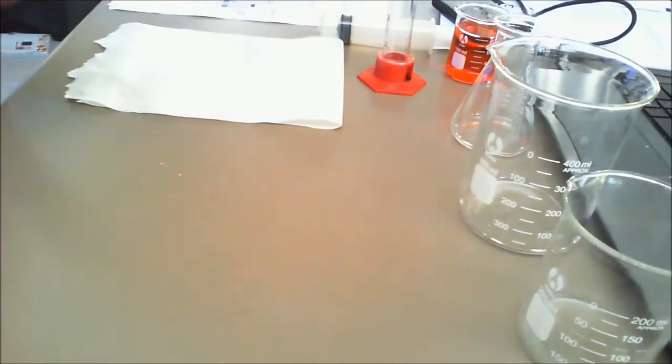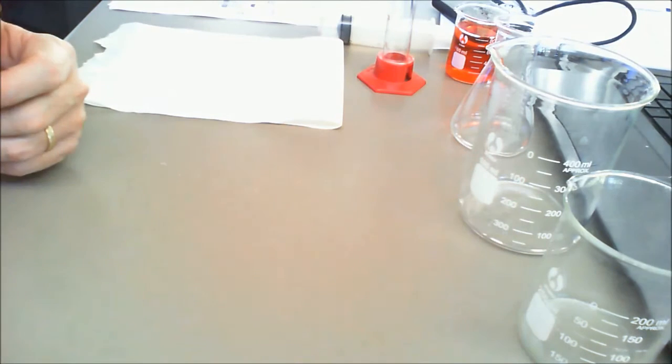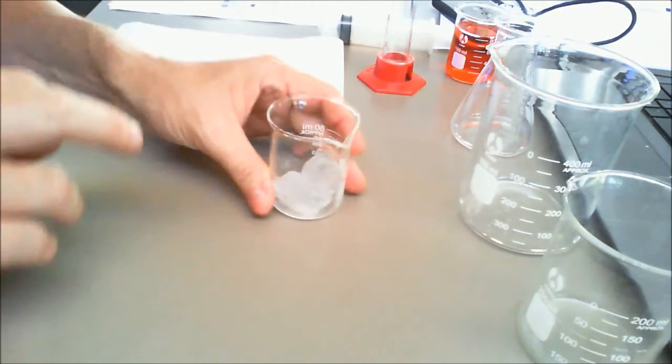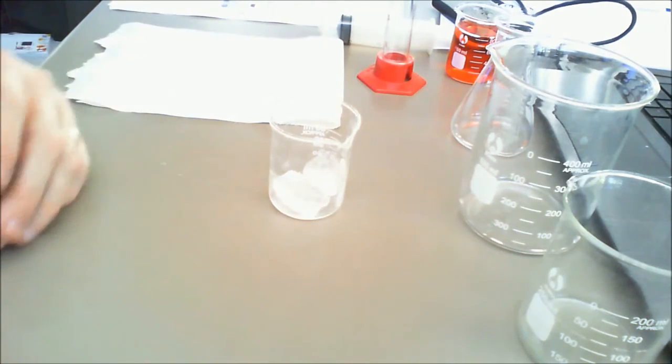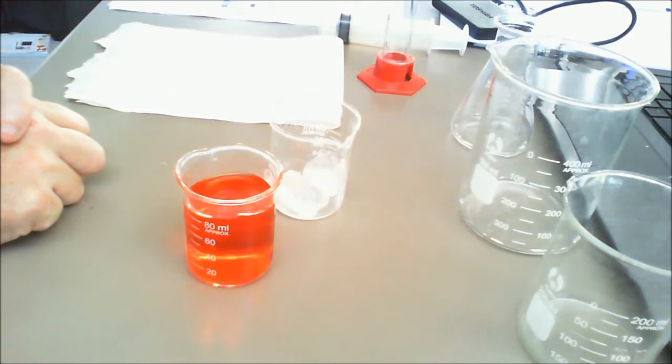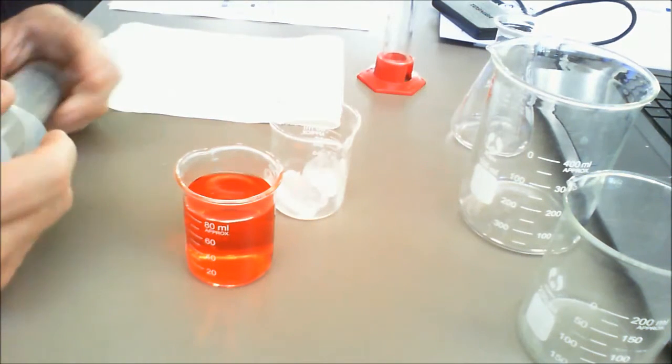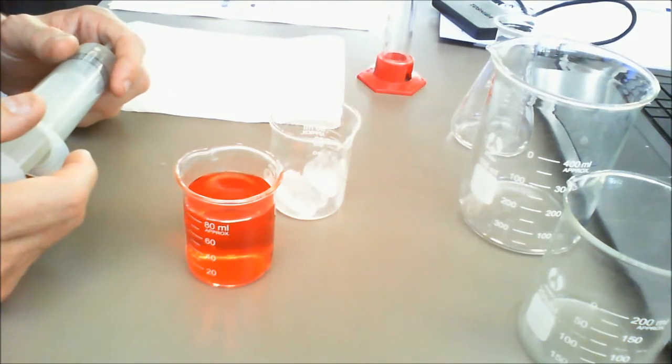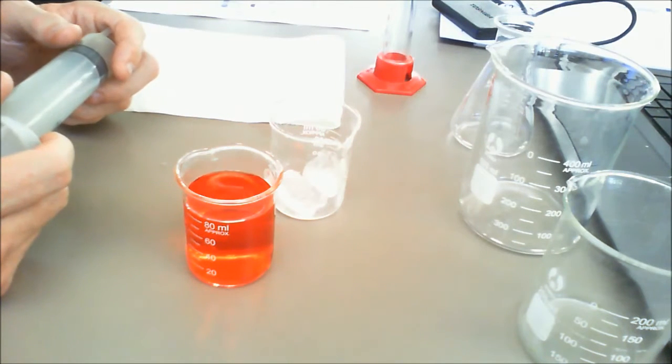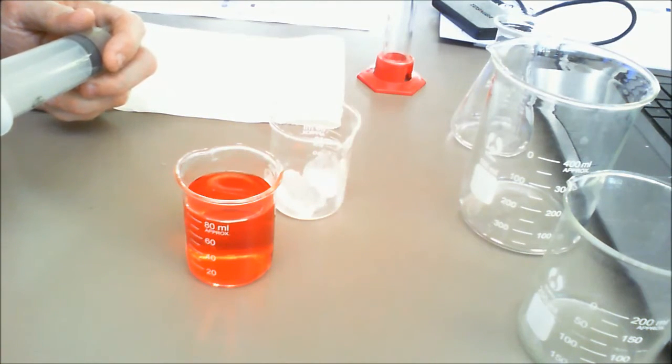Okay well what solids, liquids and gases are we going to be using today? Well our solid we're going to be looking at and using is ice which is just frozen water. Our liquid is going to be water and this one here has been just tinted with red food colouring and the gas is the gas that we use around us which is just basically air. So we're going to be using those to be able to see and identify the different characteristics.